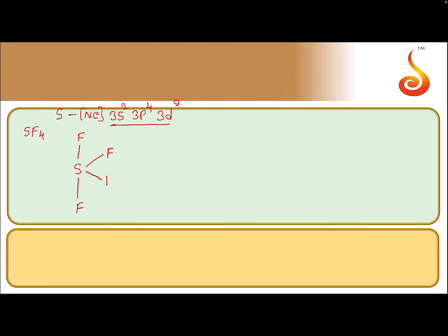By exciting electrons, sulfur can have six unpaired electrons. Four of these are involved in bond formation with the four fluorine atoms, leaving two electrons as one lone pair. This lone pair occupies the equatorial position. Around sulfur, there are four bond pairs and one lone pair, so the shape of SF4 is seesaw.